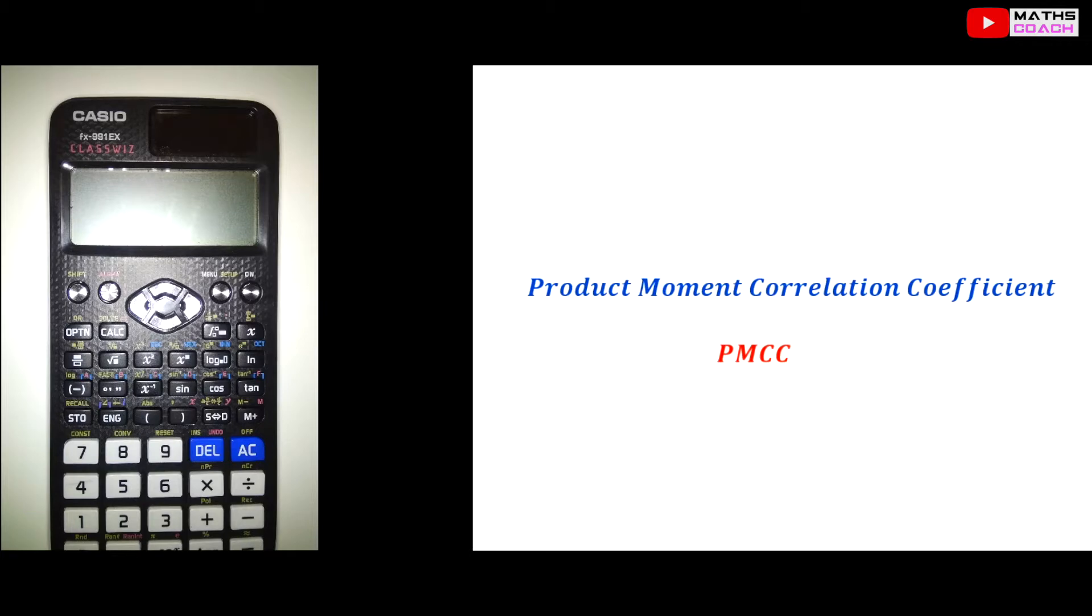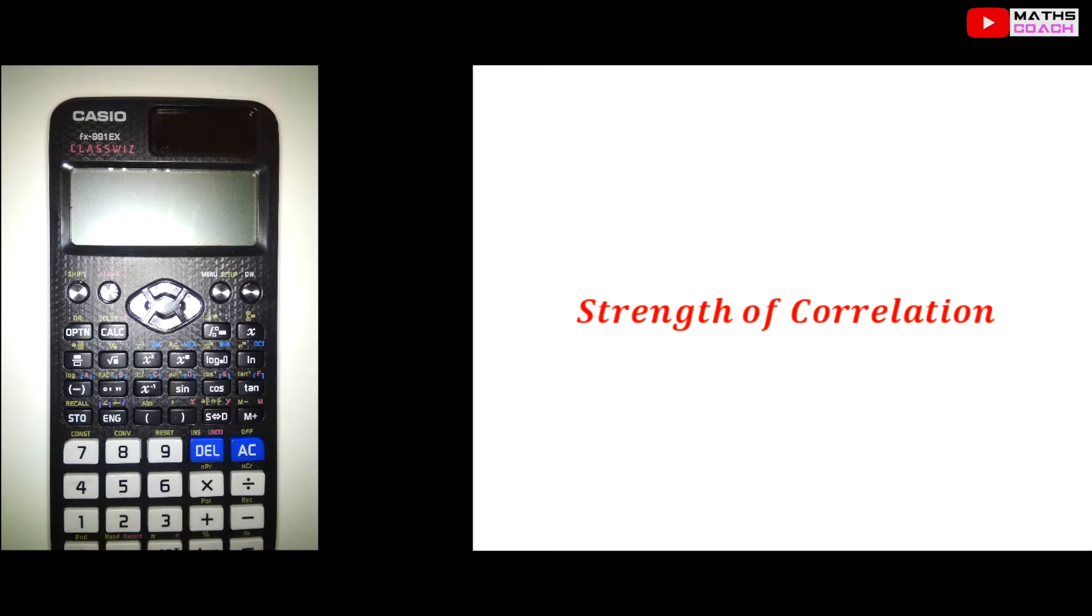So what exactly is PMCC? Simply put, it measures the strength of correlation of a line of best fit. Remember when you had to draw a scatter graph and draw a line of best fit? Well, PMCC tells you how strong or weak that correlation is. Is it strong positive or strong negative, weak positive or weak negative, or in fact has no correlation between the two variables at all? That's what PMCC will determine.